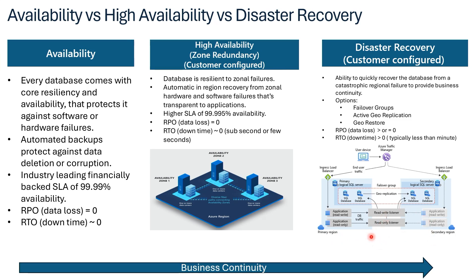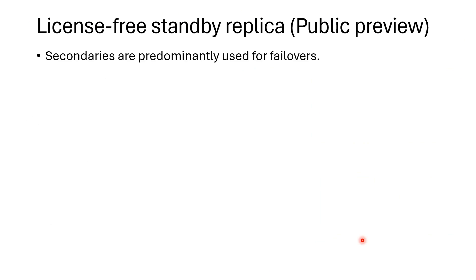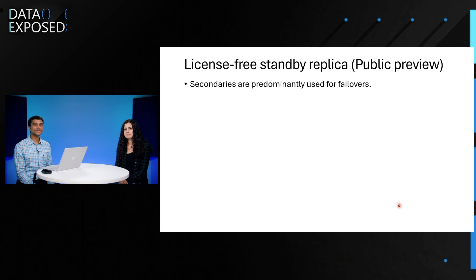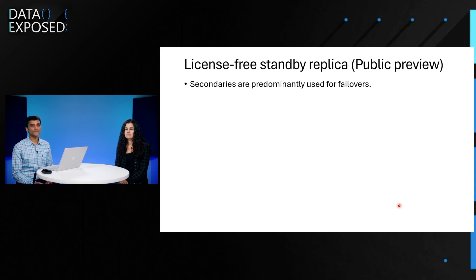This is for a failover group deployment. As you move from left to right, the business continuity goes up. Customers in some regulated industries do need to have disaster recovery in place. What we've seen is that most secondaries are predominantly used for failovers, with some workloads routing read queries to secondaries, but most need it for compliance reasons or only in the event of a failover, or for DR drills.